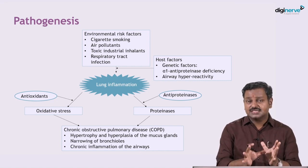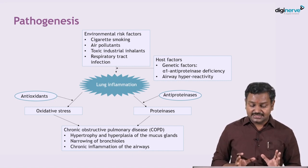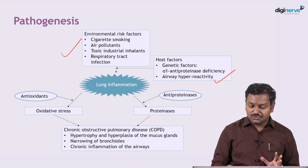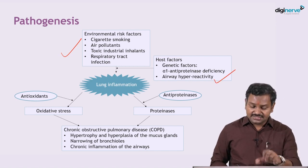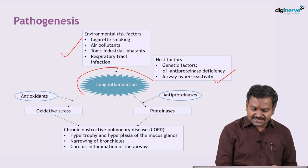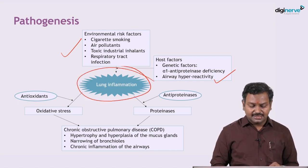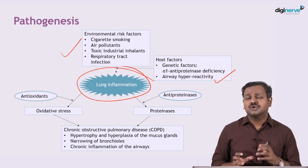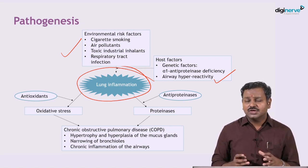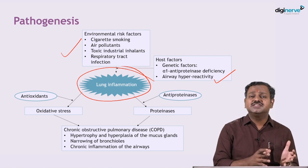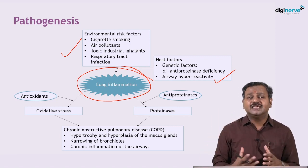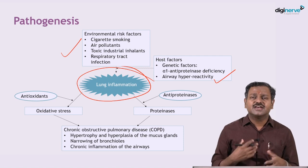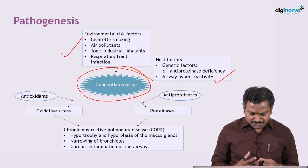In summary, there are various pathogenesis mechanisms. You have risk factors which could be environmental or host. There is inflammation occurring, with pro-oxidant and antioxidant groups in imbalance. There is deficiency of alpha-1 antitrypsin, so the proteinases will act more, and there is increased fibrosis.